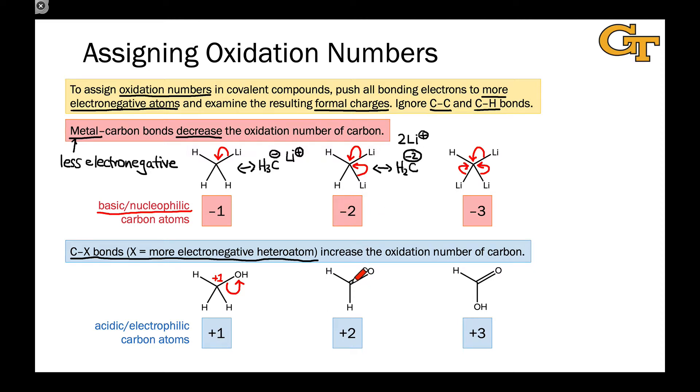With two bonds between carbon and some electronegative heteroatoms, such as oxygen, the oxidation number ends up being plus-two. We take both of the carbon-oxygen bonds, push them both to oxygen, and this helps us see that the charge on the carbon would be plus-two, and so its oxidation number formally is plus-two.